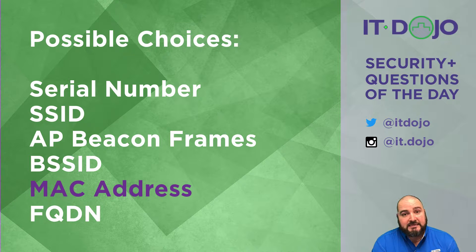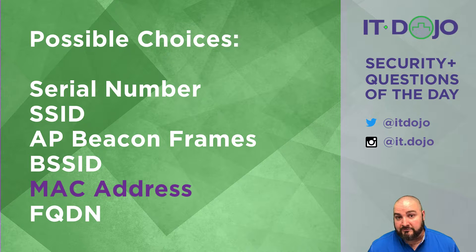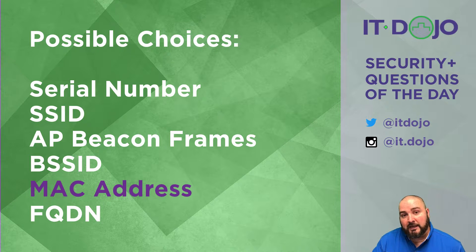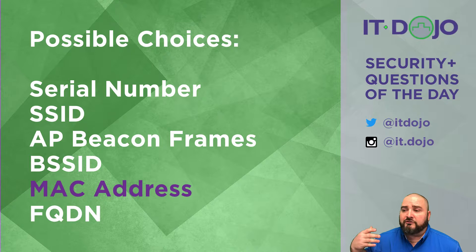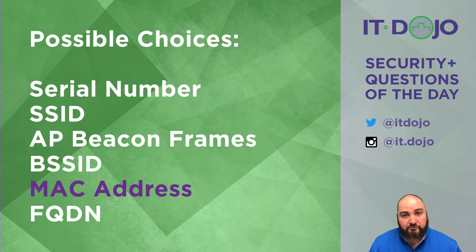Third option is the BSSID — the basic service set identifier — which is the MAC address of the access point. So that's not what you're looking for. We're on the right track: just the right value, a MAC address, but not from the right device. The next option — MAC address — that's what we're looking for. We're looking for the MAC address in the source MAC address field of the radio client transmitting a frame, whether it's a probe request, a beacon in ad hoc mode, or regular frames. We're looking for MAC addresses of clients who aren't supposed to be in our environment.